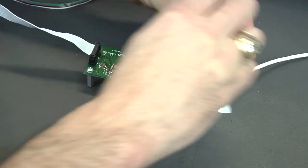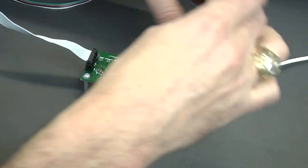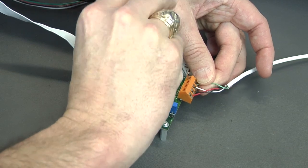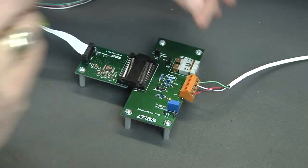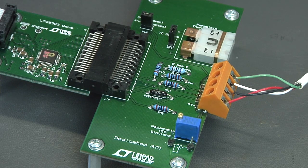The LTC2983 demo board interfaces to the Linduino or DC590 USB board and connects to the dedicated RTD board. The demonstration system is useful in evaluating the RTD performance and features of the LTC2983.